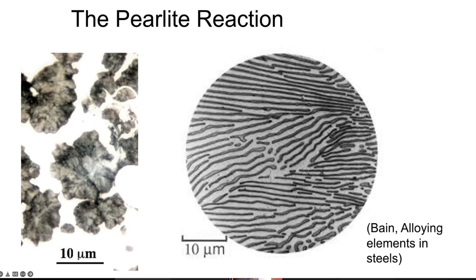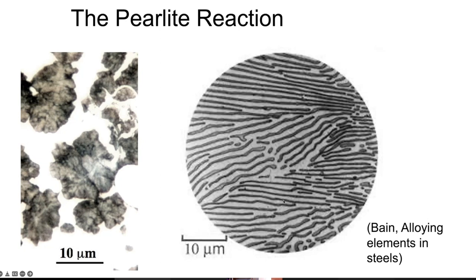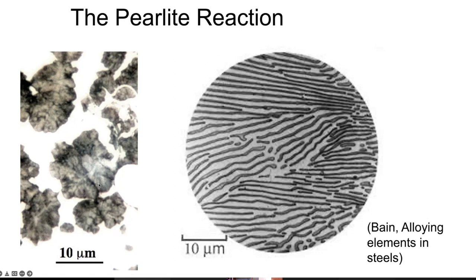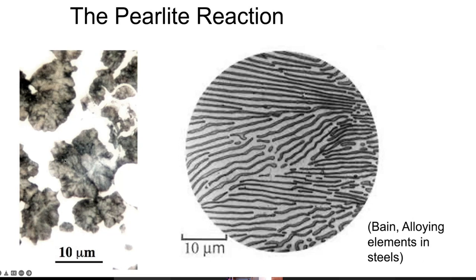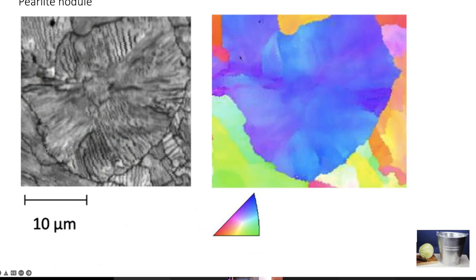This is a partially transformed sample of pearlite growing as nodules, which I'll describe in detail shortly. A colony of pearlite is defined as a region in which the cementite is growing more or less in the same orientation. A nodule has an overall spheroidal shape and contains many colonies growing in all sorts of directions. Here is another micrograph of a nodule showing pearlite colonies growing in different directions along the transformation front.